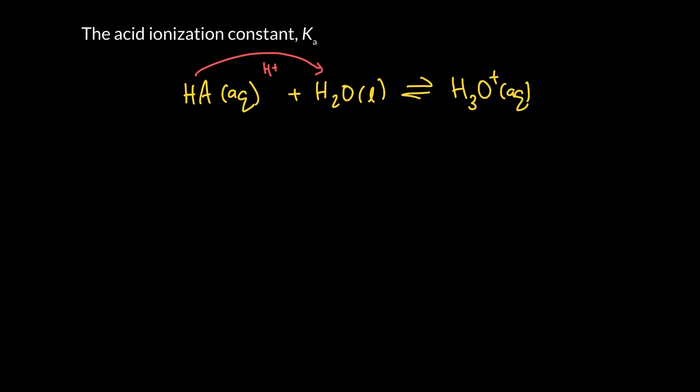The hydronium ion will lower the pH and make the solution acidic. The reaction also leaves behind the acid minus the proton — that is the conjugate base, A⁻. Because this is an equilibrium, we can define an equilibrium constant, which we call Ka. The 'a' tells us it is an acid. It is simply a Kc expression, but for acids we have our own special way to write it as Ka.